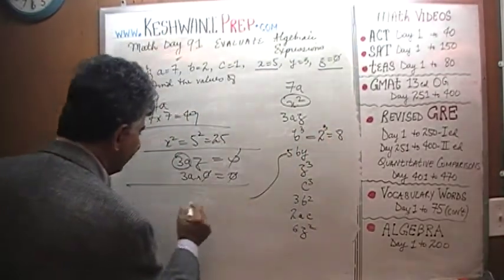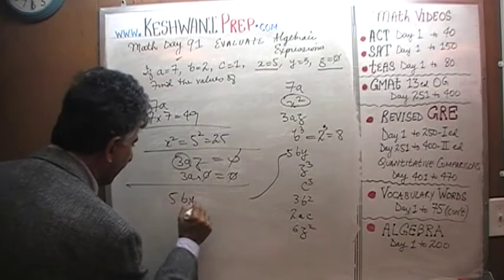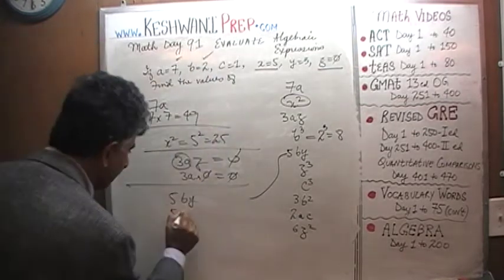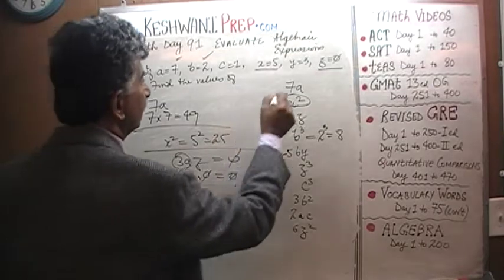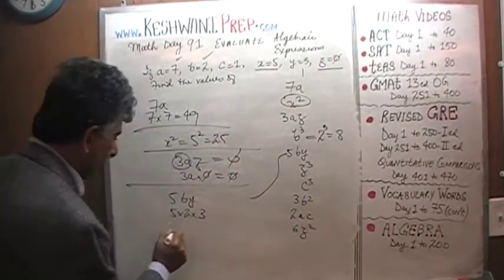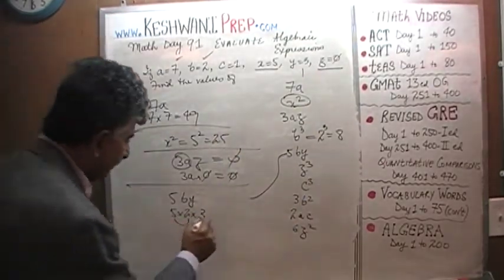Then we have 5BY, 5 times B, which is 2, times Y, which is 3. 2 times 5 is 10, and 10 times 3 is going to be 30.